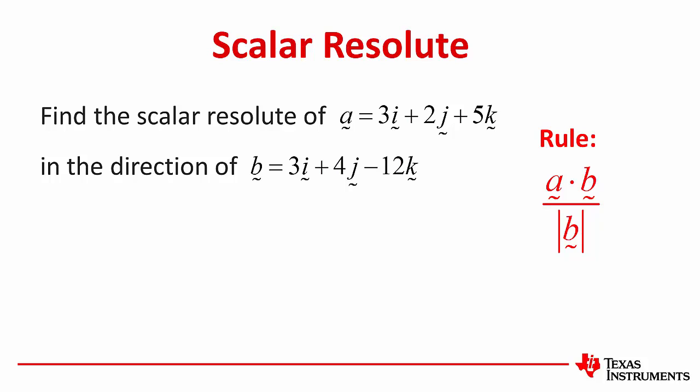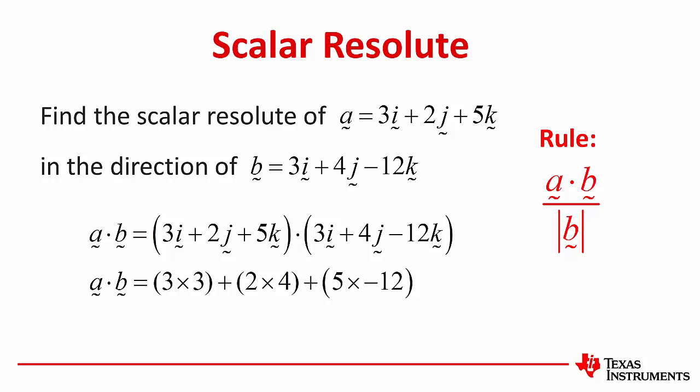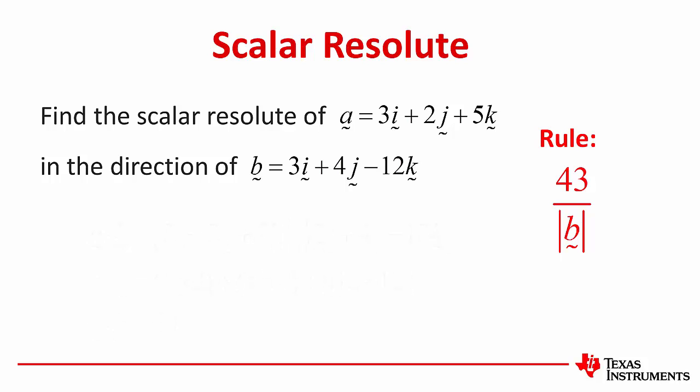We'll start by writing down the formula for the scalar resolute of A on B. We'll calculate the dot product of A and B, multiply the respective components and we get 43. Place that in the rule. Next, calculate the magnitude of vector B. Pythagoras in three dimensions and we get the magnitude of vector B as 13, so our scalar resolute of A in the direction of B is 43 on 13. How did you go?